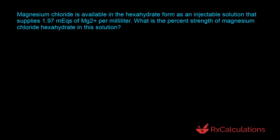Let's analyze the question. We are supposed to find the percentage strength of magnesium chloride hexahydrate in the solution, and we've been given the milliequivalents of the magnesium ion per milliliter. Although this question asks for percent strength, it requires applying knowledge of milliequivalent calculations. The approach will be to use the milliequivalents equation to determine milligrams per milliliter, then convert that to percent strength. The equation at a concentration level is: milliequivalents per milliliter equals milligrams per milliliter divided by molecular weight times valence.